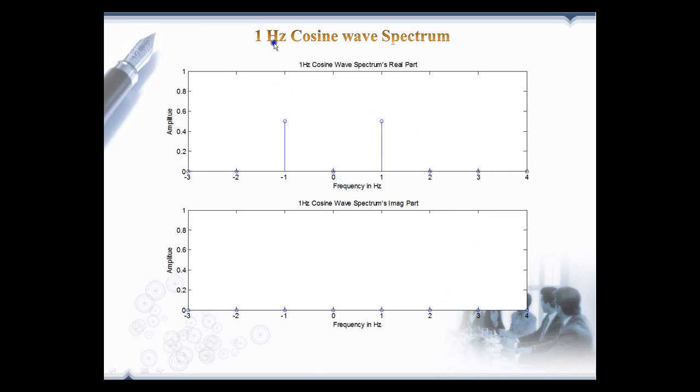Let's take here unity amplitude 1 Hz cosine wave spectrum and see how to retrieve the time domain signal. The real part and the imaginary part of the spectrum is shown here. The imaginary part is zero and the real part contains the positive and negative frequency of amplitude 1/2 at 1 Hz. Next we see how this positive and negative frequency contribute to the time domain signal.